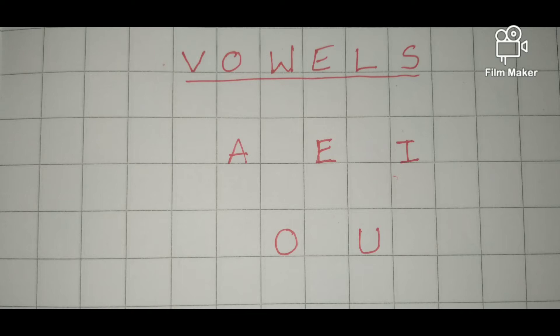These five letters are called vowels. A E I O U. These five letters are called vowels.